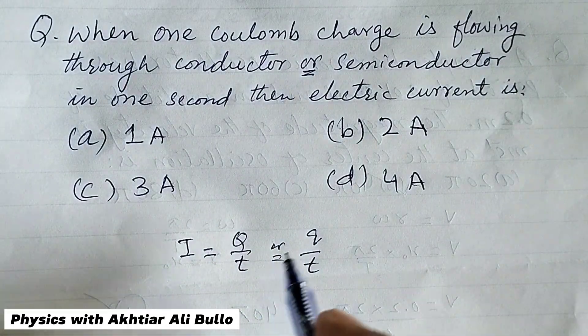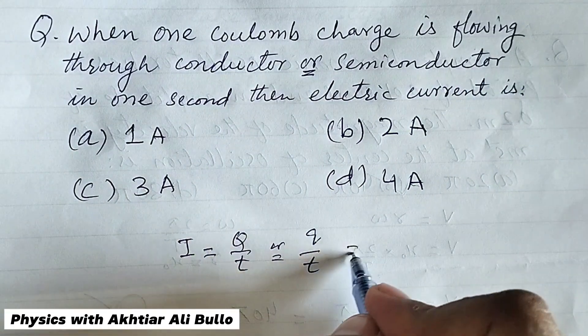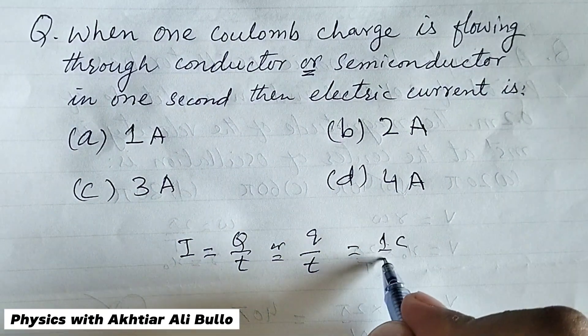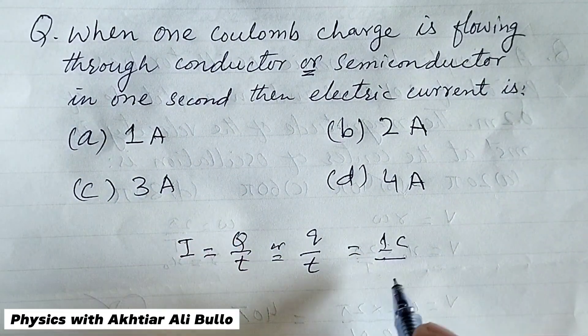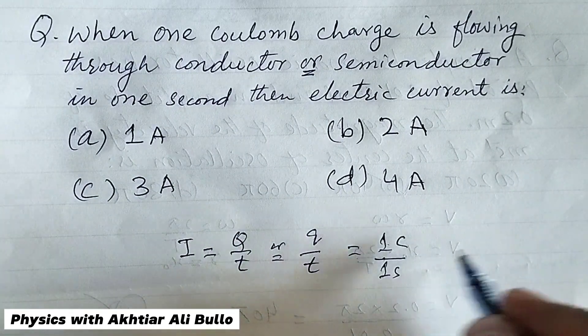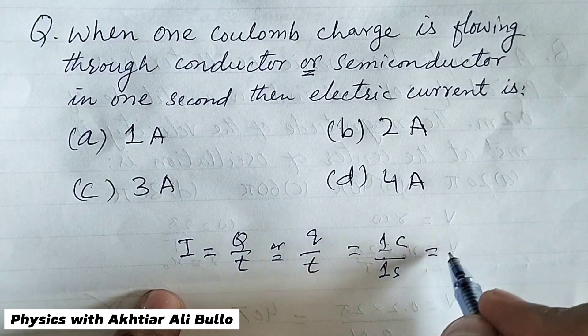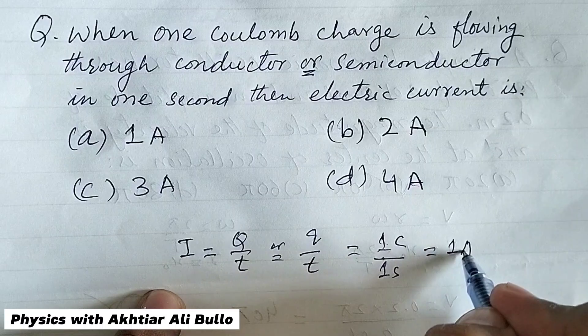When charge is one Coulomb and time is one second, so electric current will be one ampere,